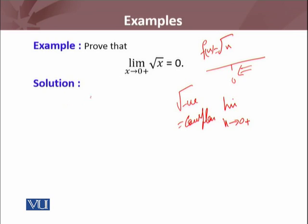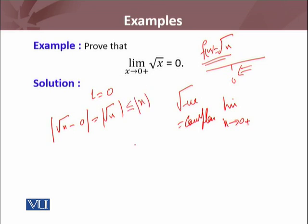Now we have to formally prove this. So our L is 0, and f(x) is √x. We will consider the absolute value of √x minus 0. This is for positive numbers only — for right-sided limits. This equals |√x|, and furthermore this is less than or equal to |x|. So for every ε > 0, I want this to be less than ε, which means δ = ε. So our interval is from 0 to δ, where δ = ε.